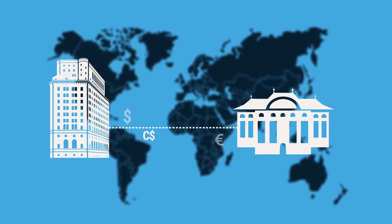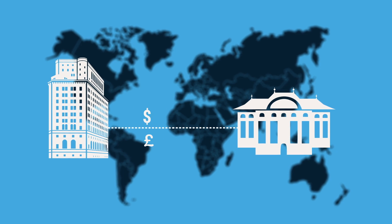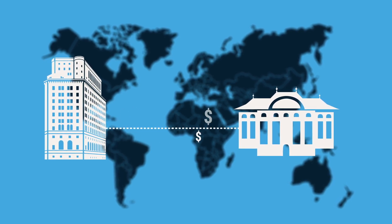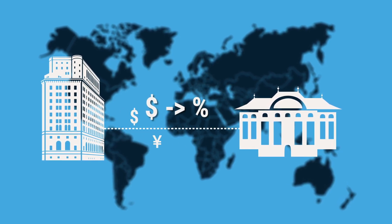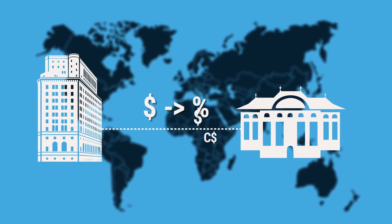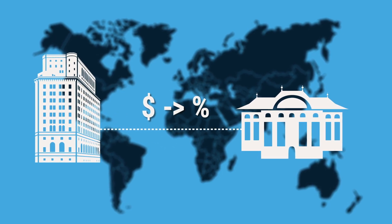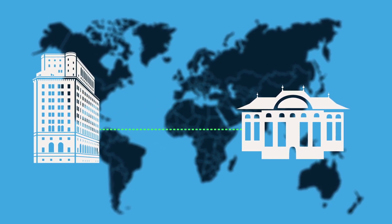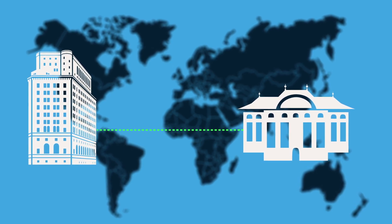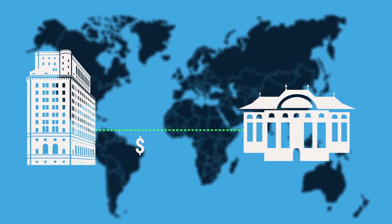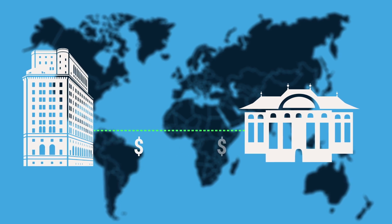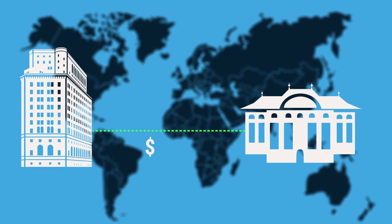The Fed supplies dollars and receives an equivalent value of foreign currency. At the time of the agreement, a market-based exchange rate is applied to exchange foreign currency for U.S. dollars. That same exchange rate is then applied when the transaction matures. In addition to a fee paid by the foreign central bank, the Fed receives back the same amount of dollars it initially provided, meaning it bears no foreign exchange risk.